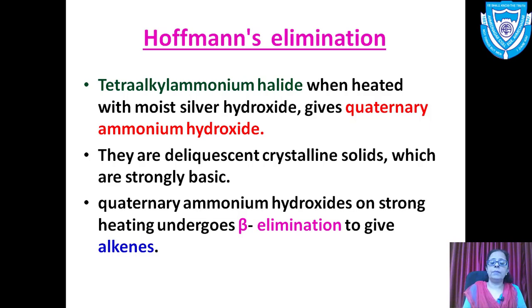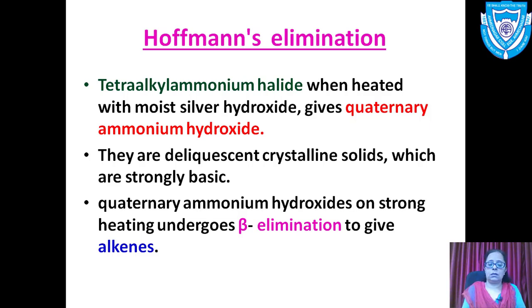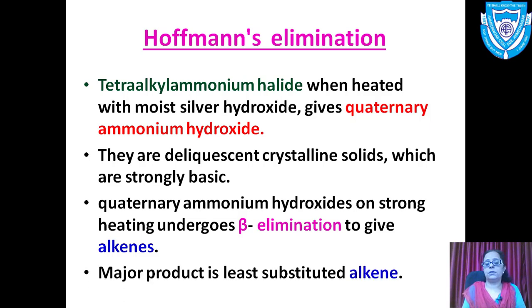On strong heating, quaternary ammonium hydroxide undergoes beta elimination to give an alkene. The major product obtained is the least substituted alkene, which is in contrast to Zaitsev's rule.